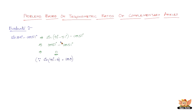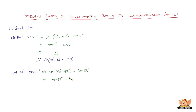Let us solve another problem: evaluate cot 34 degrees minus tan 56 degrees. Cot 34 can be written as cot of 90 degrees minus 56 degrees, because 90 minus 56 is nothing but 34, and minus tan 56 remains. This is no different from the previous problem — cot of 90 minus 56 equals tan 56 degrees, so tan 56 degrees minus tan 56 degrees equals 0. The reason: cot of 90 degrees minus theta equals tan theta.